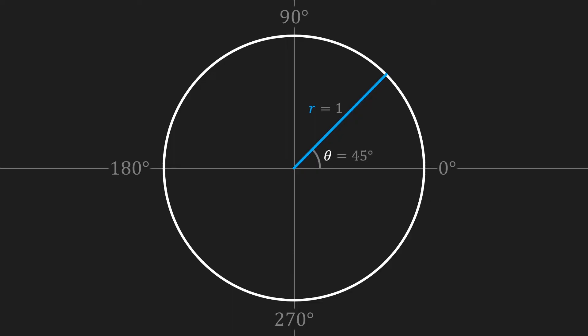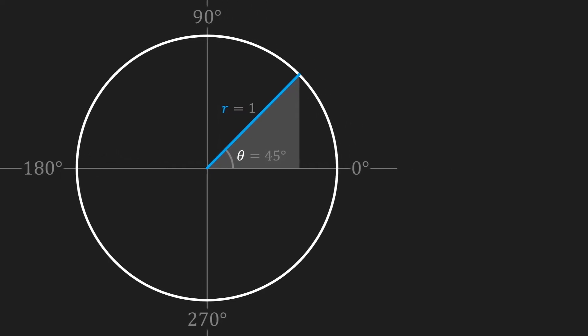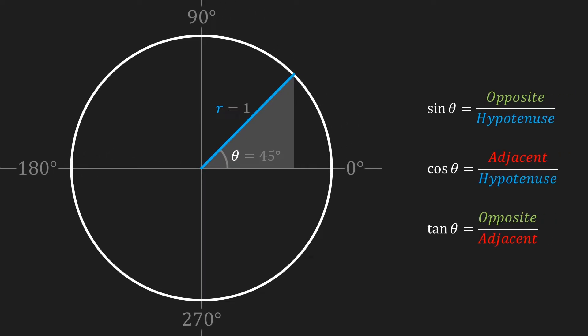I'm now going to draw a triangle under this blue line. By now, if I show a triangle you should immediately think of our trigonometric functions. The radius of our circle — in other words the blue side — is the hypotenuse. The base of our triangle is the adjacent side and the height of our triangle is the opposite side. However, it is more correct to think of the adjacent and opposite sides as being the coordinate of the point where our blue line intersects with the circle.